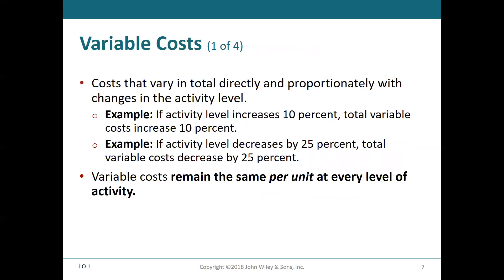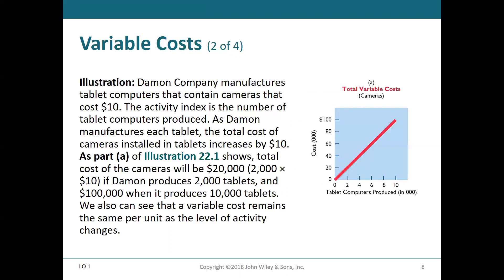Variable costs are costs that change directly and proportionally with changes in your activity. If you increase whatever activity you're measuring by 10%, then your variable costs also increase by 10%. If your activity level goes down by 25%, your variable costs will also go down by 25%. They remain the same for each measurable unit at every level of activity. For example, Damon Company manufactures tablets that have cameras that cost $10, so for every tablet produced, the cost of cameras goes up by $10.